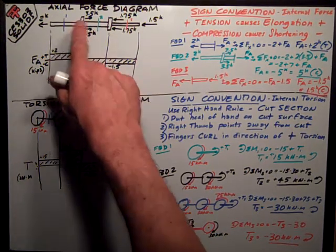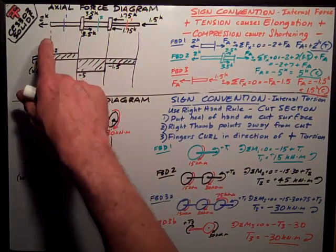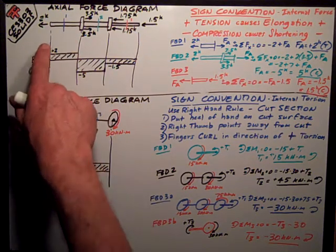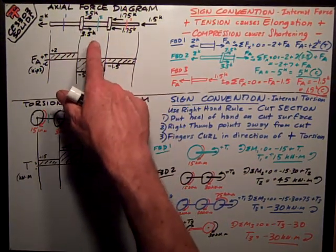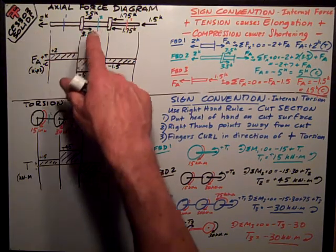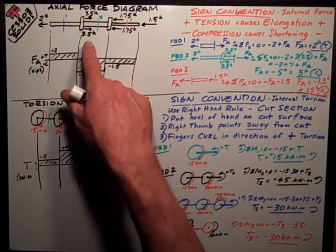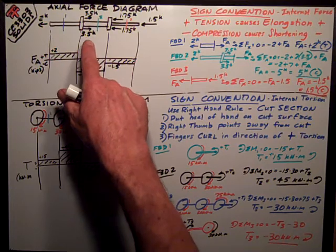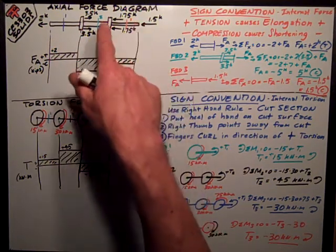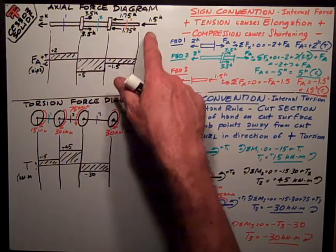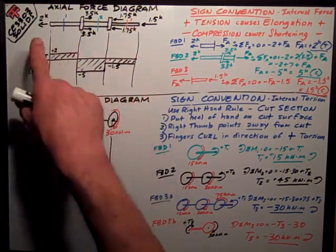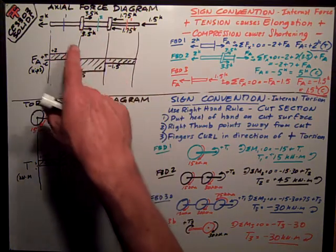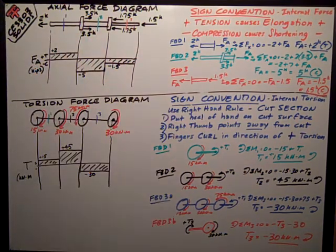Let's start off talking about axial force diagrams. This is a homework problem. I have a bar with collars where I can apply additional axial force: a 3.5 kip force at one point, two 1.75 kip forces, and a 1.5 kip force at the other end. I can see that's in equilibrium — the sum of forces in the x direction equals zero.